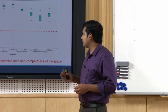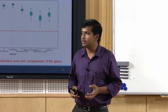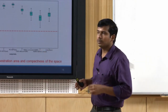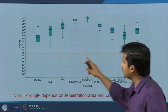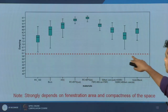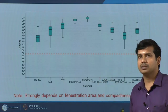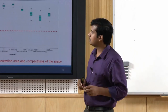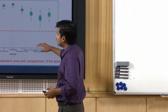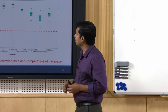Thermal damping strongly depends on the fenestration area and the compactness of the space. Looking at what the national code specifies — for a hot and dry climate where we did the assessment — the minimum required thermal damping was 60 percent. Below this the wall is not compliant to the national building code.